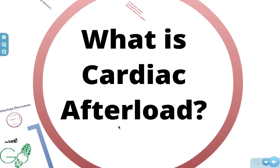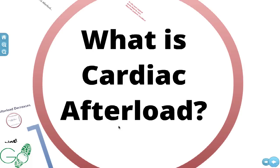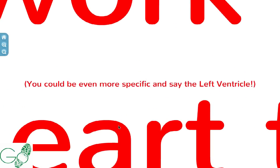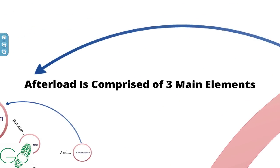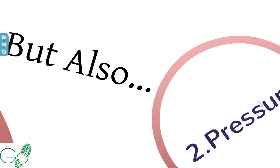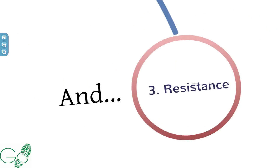Welcome to this presentation on cardiac afterload. Cardiac afterload is the work required by the heart — or more specifically, the left ventricle — to move blood into systemic circulation. Afterload is comprised of three main elements: ejection, pressure, and resistance.